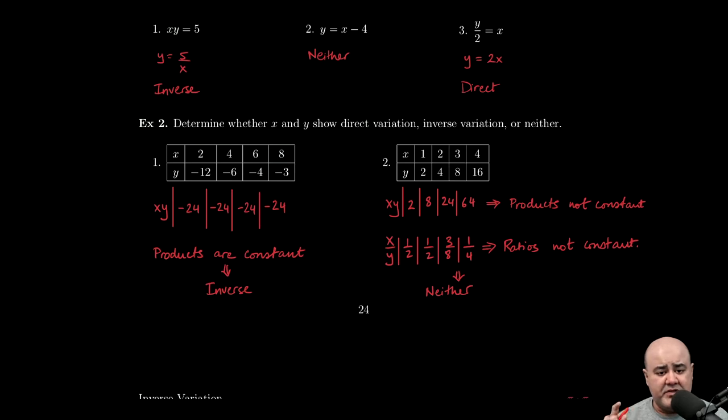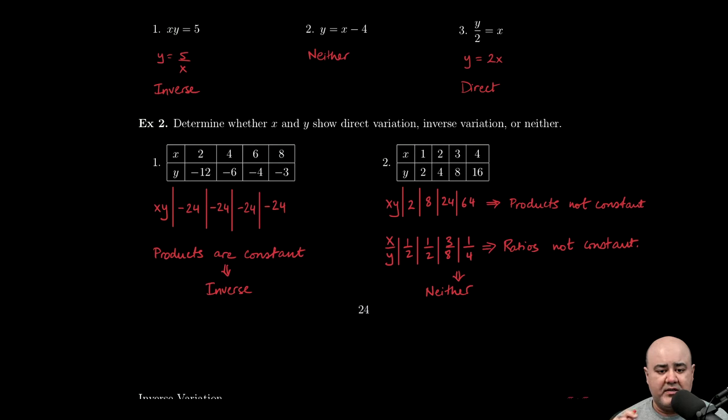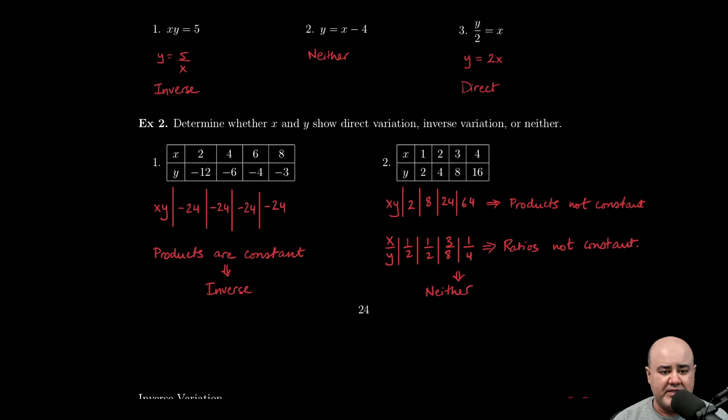For inverse variations, we know that the x and y products are constant. And products are always easier to compute, so I do that first, always, regardless of what type of problem it is here.